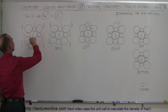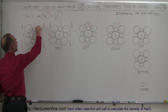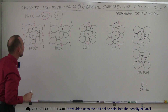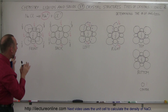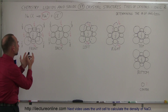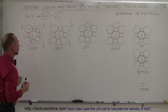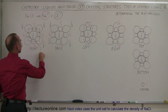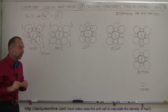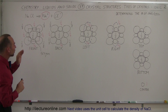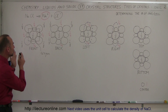The unit cell goes from the center of the chlorine ions through the sodium ions and around. The side of the unit cell is about 564 picometers, so it's a cube where each side has a length of about 564 picometers. We're now going to determine how many of each ion are within that unit cell structure.